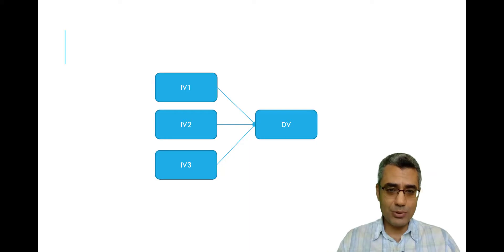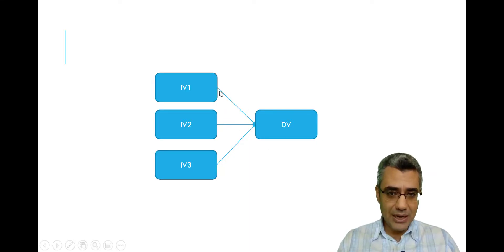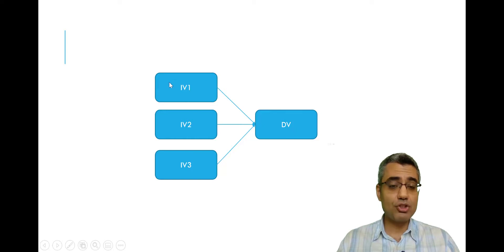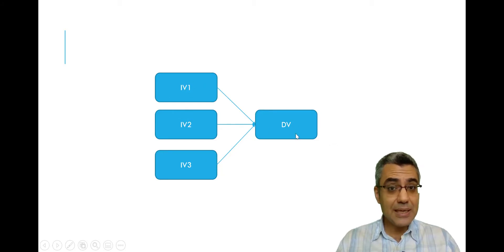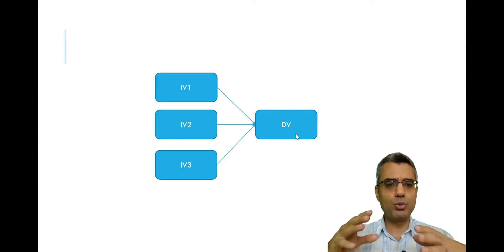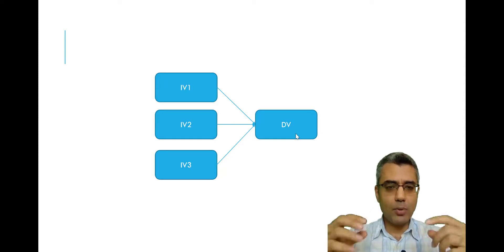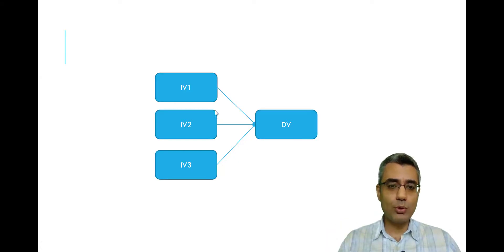In this model, there are single-headed arrows, which means I want to predict — these three variables impact the dependent variable. Changing the three independent variables will make changes in the dependent variable. To test this model, we use multiple regression analysis, which is used when you have more than one independent variable or more than one predictor.